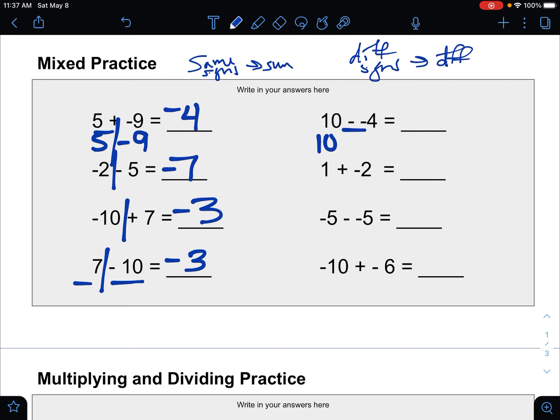For the one after this here, 10 minus a negative 4 is just 10 plus 4. They're both positive, find the sum, 14.